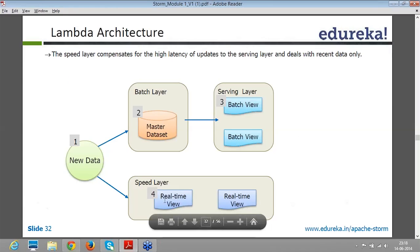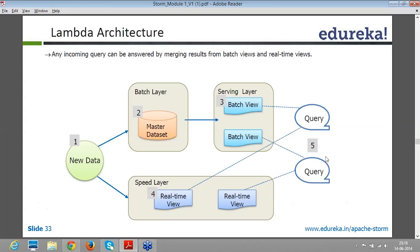And then in the speed layer also, you pass the data into the speed layer where you process the data in real time because data will go through all these functions in real time and you will get the real time data out of your speed layer also.